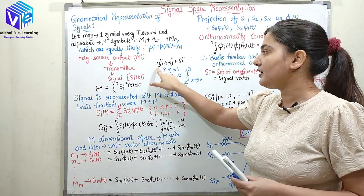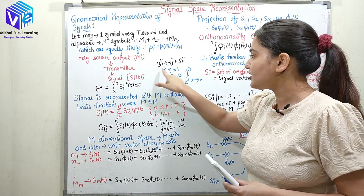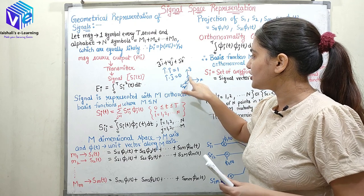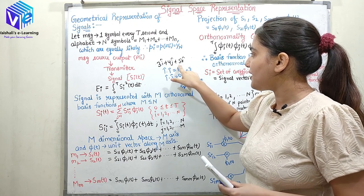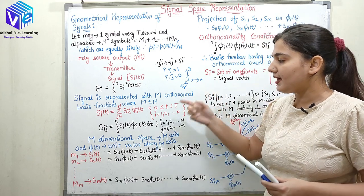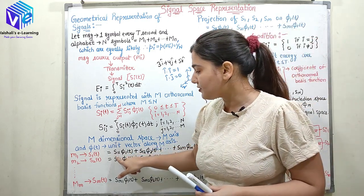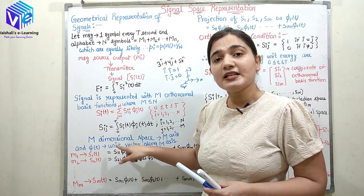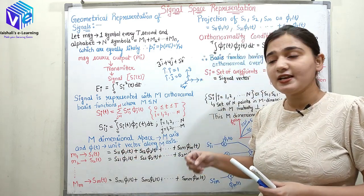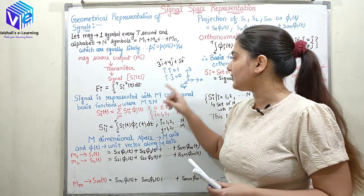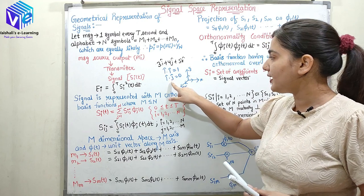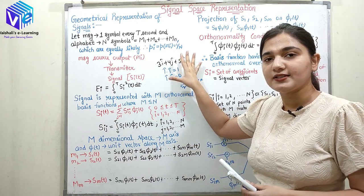What is 3 here? 3 is the projection on the x-axis. 4 is the projection on the y-axis and 5 is the projection on the z-axis. Similarly, here I'll be having some projections which are represented by a signal. Here I have signal projections — S11 represents the projection of the signal. I'll be talking about these things in detail, so don't worry.